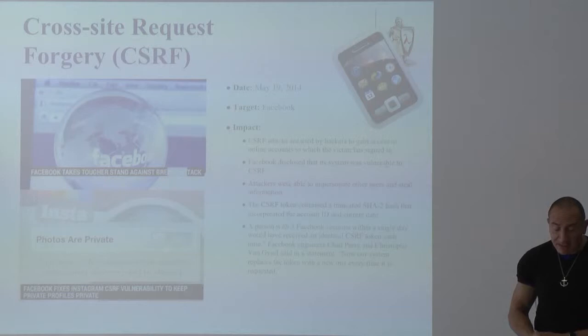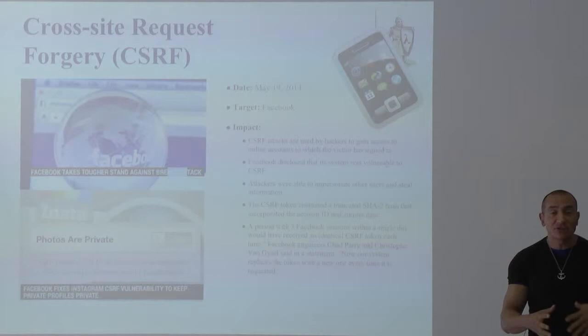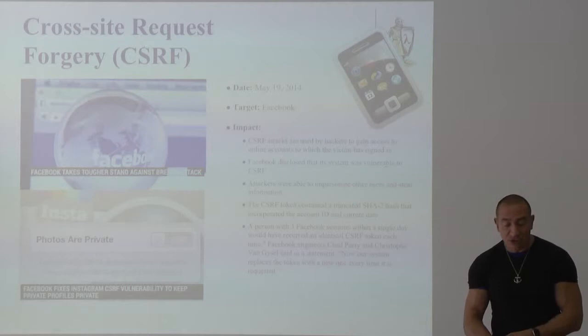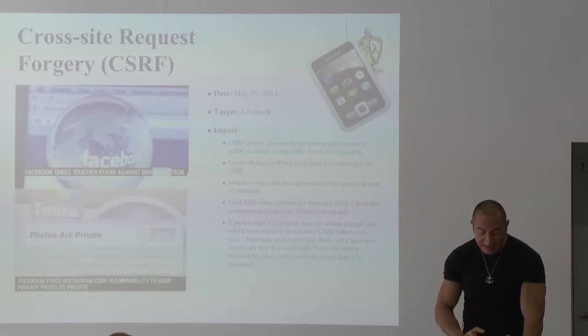Another information flow vulnerability is cross-site request forgery. This happens when a user has already authenticated and a malicious attack uses the authentication session to perform malicious operations. Facebook itself was reportedly vulnerable back in 2014 — they discovered the vulnerability and fixed it before it was too late.